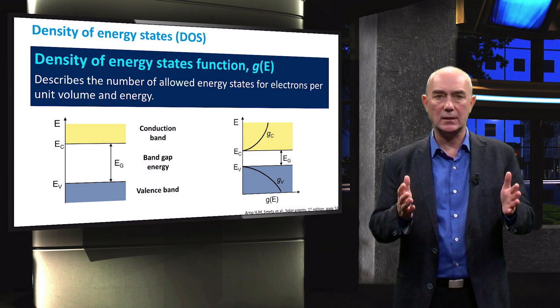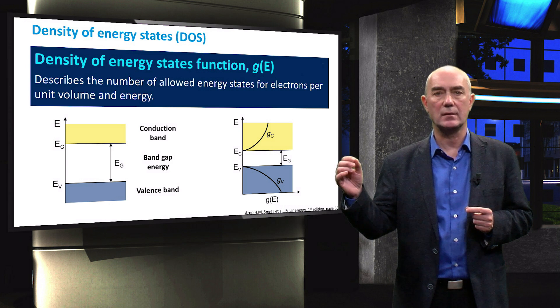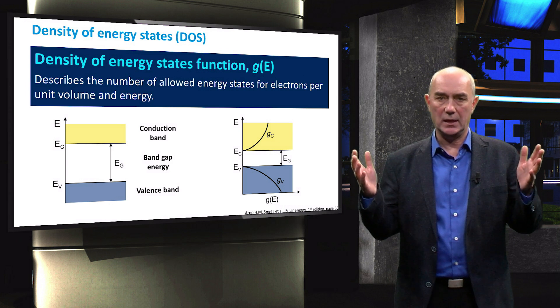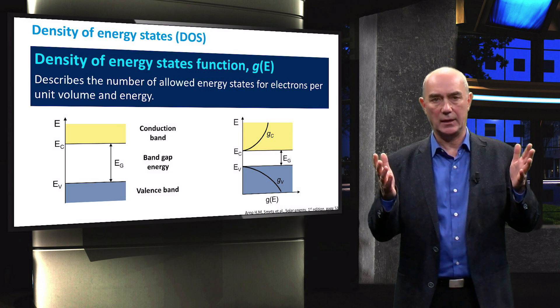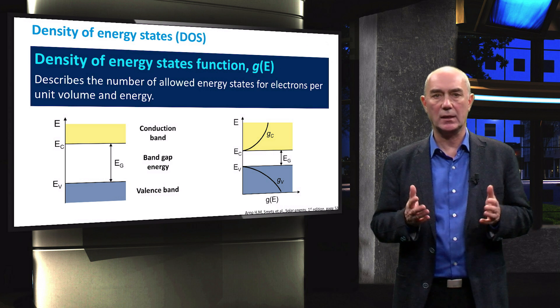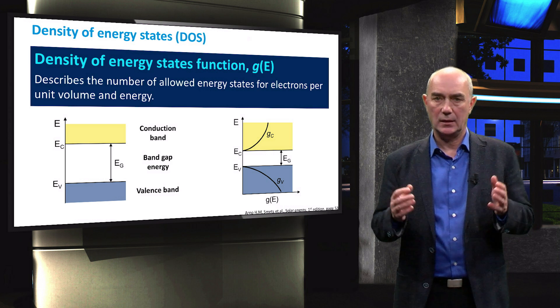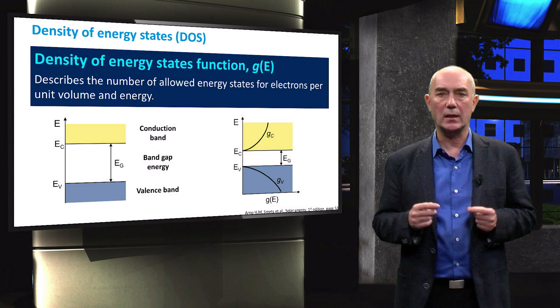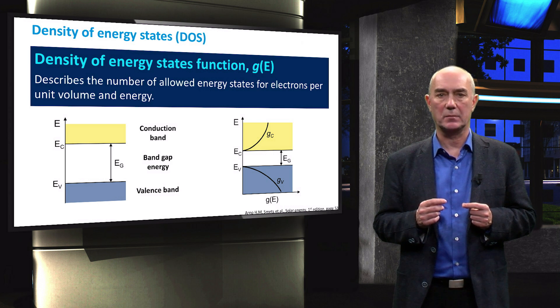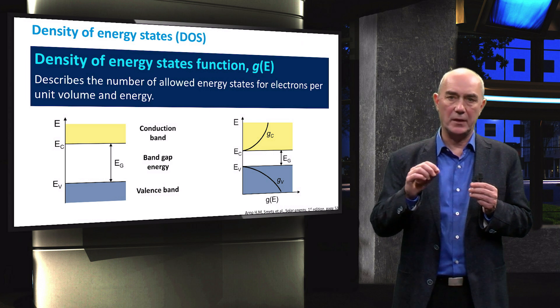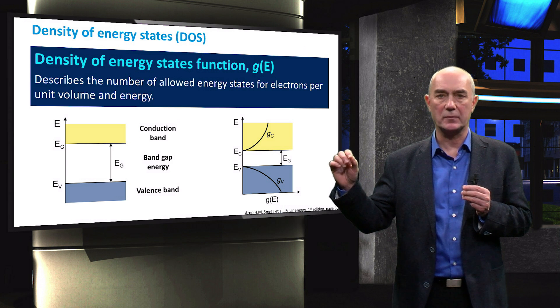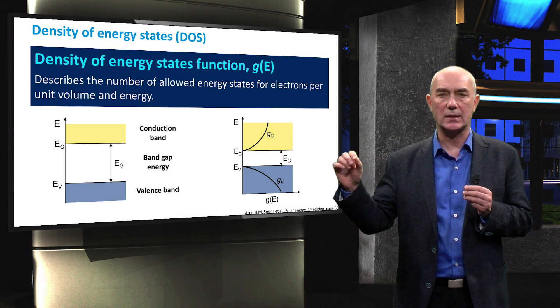Here you can see how the density of states varies with the energy. We have the density of states on the x-axis and the energy levels on the y-axis. You can see that there are no allowed states in the band gap. Then, the further we move from the edges of the bands, the more energy states are available.